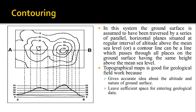This contour map is very useful for geological field work because it gives an accurate idea about altitude and also the nature of the ground surface. If you stand somewhere on this line you can say this point is about 20 meters above sea level. You can also see that this area is somewhat steeper — the spacing between contours is much wider on a gentle slope and much closer on a steep slope, so just by seeing the contour you can guess the steepness of the ground.